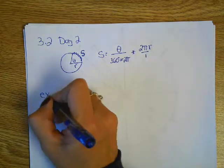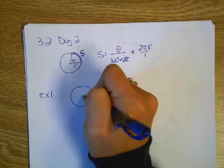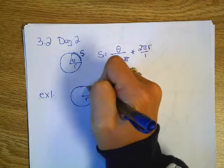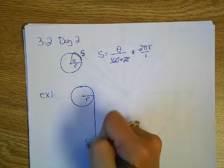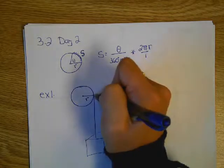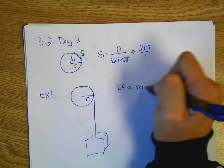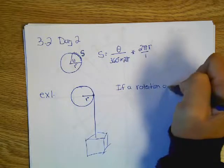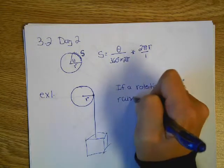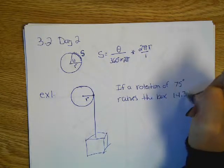So our first example today. We've got this pulley that we don't know the radius. And this pulley has some rope suspended in the air, and we've got this box down here. If a rotation of 75 degrees raises the box 14.3 inches.